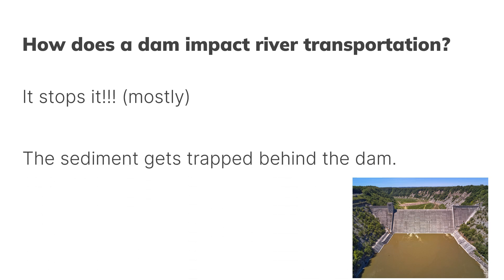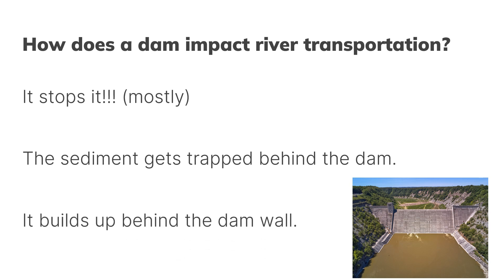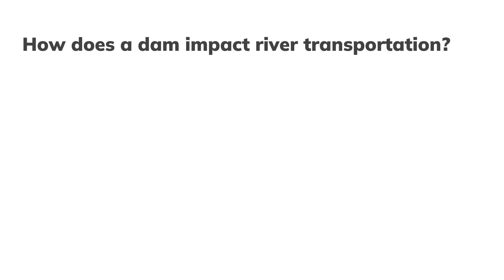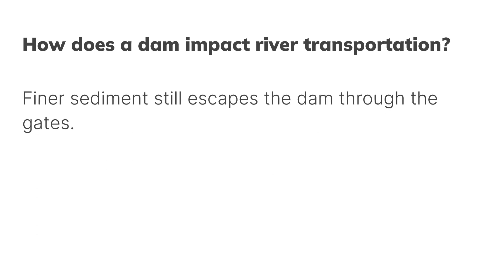It's quite straightforward — sediment gets trapped behind the dam and builds up behind the wall. The brown colour at the front of the diagram is the reservoir behind the dam, filled with sediment, which gives it a dirty colour because it's getting trapped. The exception is that finer sediment still escapes the dam through the gates. Dams have anywhere between two and twenty-two gates that help control the flow of water, and finer sediments — the silt — can get out through those as well.